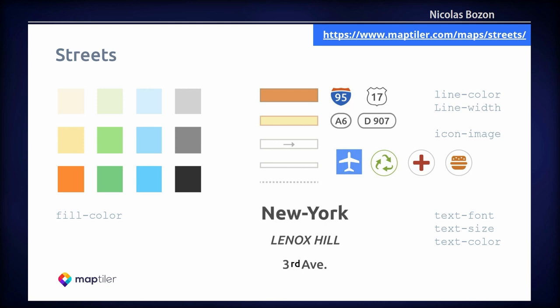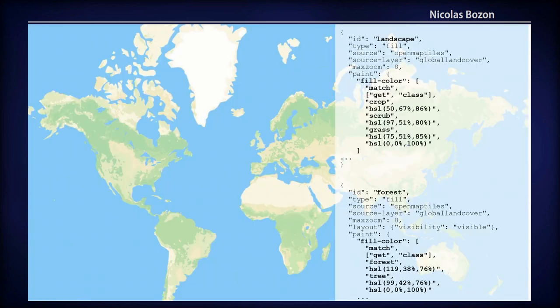There are many other parameters to take into account when working with vector tiles, but this illustrates the cartographic simplicity they offer. Colorimetry, iconography, and typography are just the foundation of a successful vector-based map. The Street style is also being modernized and simplified, and it will soon land in MapTiler Cloud as Street V2.